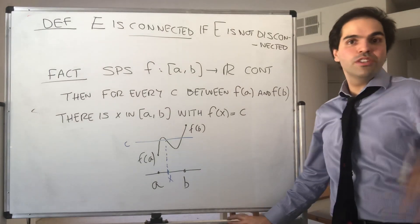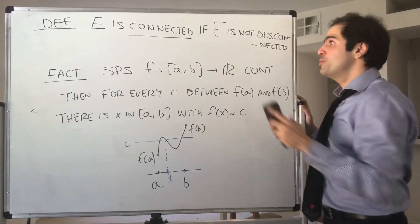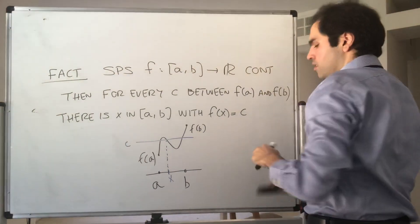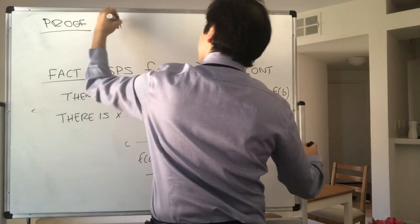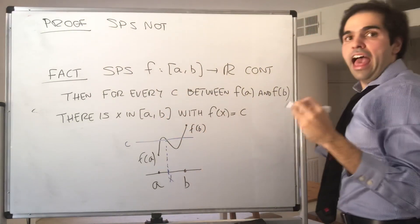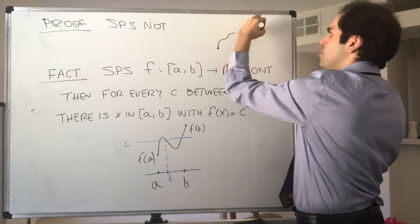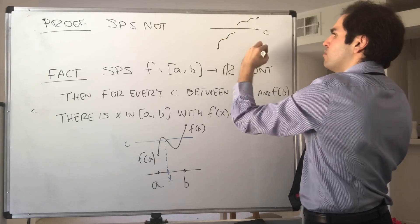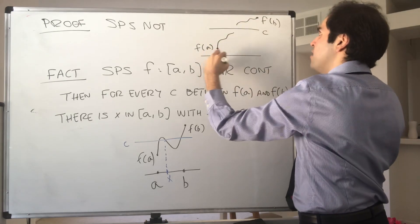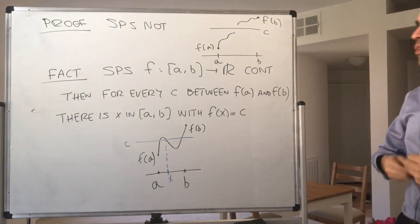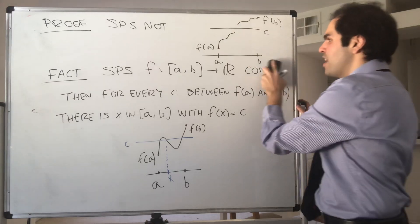Usually it's proven using some contradiction involving Bolzano-Weierstrass, but here it's a much more elegant proof. Proof: suppose not — what this means is that f skips the value C. So the way it might look is like this, where this is C, and then f goes above or below. So we would like to consider two sets: the values where f is less than C and the values where f is bigger than C.